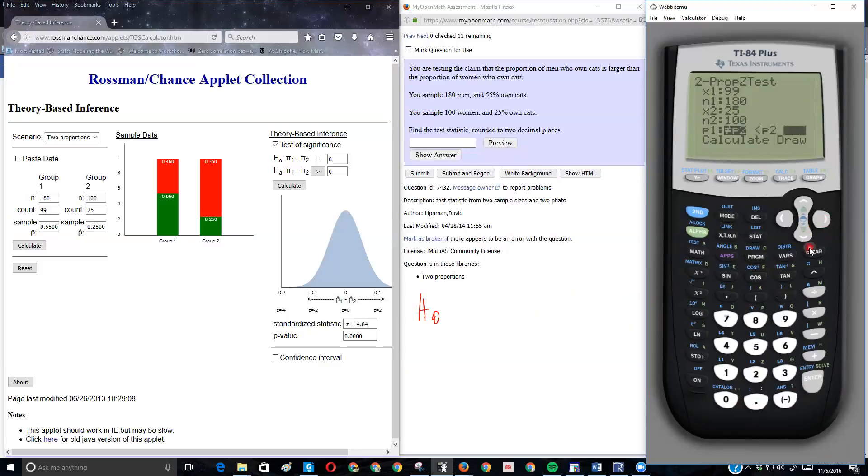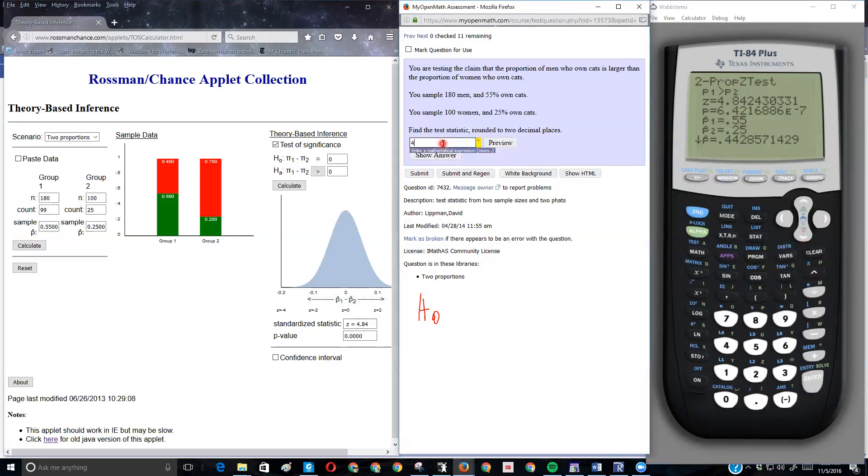I said right-tailed, but it won't matter for the test statistic, the Z score. That only matters with the P value. And this is also telling me 5.84, two decimal places. So I'm sure I'm going to get this right.